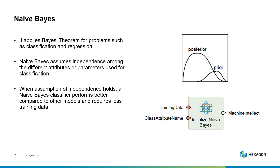Next is Naive Bayes. This is a classification technique based on the Bayes theorem that assumes independence among the predictors. This classifier assumes that the presence of a particular feature in a class is unrelated to the presence of any other feature — that your data isn't connected in any way. When this assumption holds, this classifier performs better compared to other models, and it actually requires less training data as well.